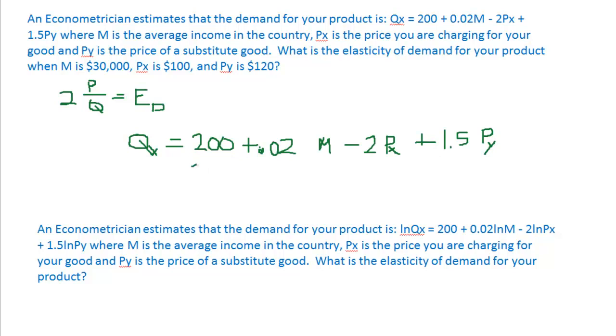So we have 200 + 0.02M, M is 30,000, minus 2, you're charging $100, plus 1.5 times 120. I calculate that is 780.